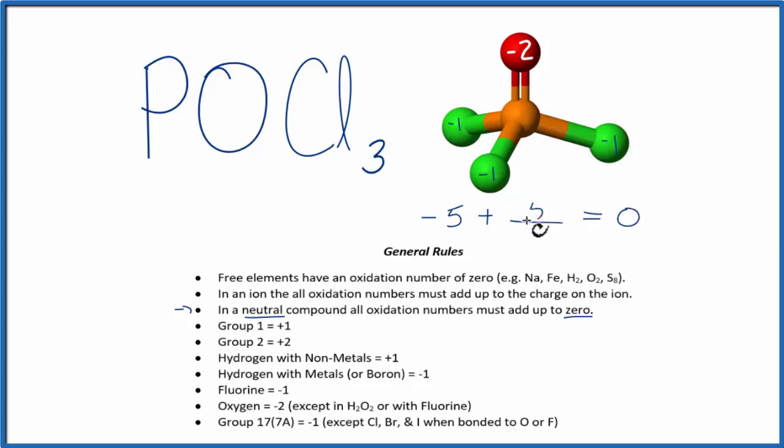So a minus five and a plus five, that equals zero. So the oxidation number on the phosphorus is plus five. And those are the oxidation numbers for POCl3.